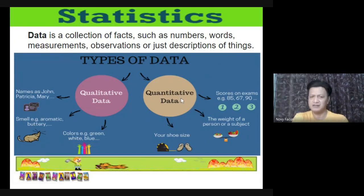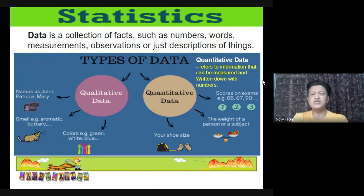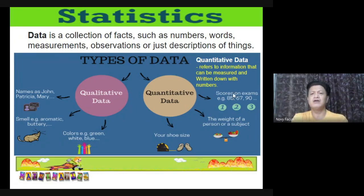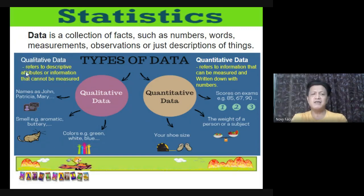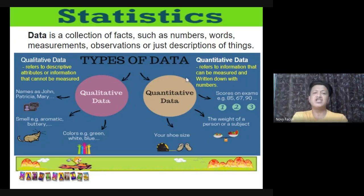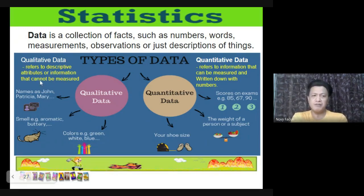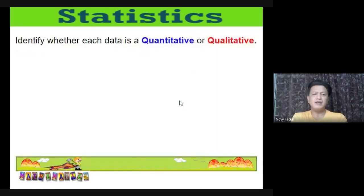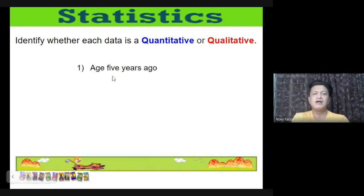Quantitative data refers to information that can be measured and written down with numbers — it is countable and numerical. Qualitative data refers to descriptive attributes or information that cannot be measured — it is categorical, based on the attributes of the information.